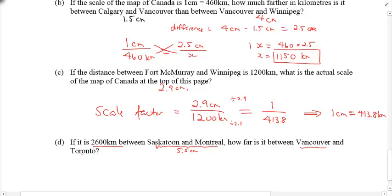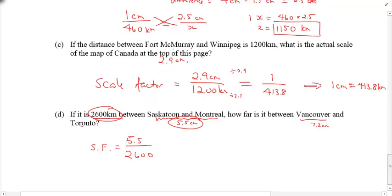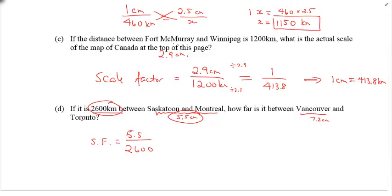How far is it between Vancouver and Toronto? So, because you know the actual and the model, you can come up with the scale factor by just using this information between Saskatoon and Montreal. So, the scale factor would be 5.5 over 2,600. Now, we can use this scale factor now to help us determine the actual distance between Vancouver and Toronto. Because now, I'll take that scale factor of 5.5 over 2,600 and make it equal to 7.2 over, I don't know, whatever you're looking for, which is the actual distance. Once again, cross-multiply to solve. I'll let you try this one, and I'll give you the answer right here.